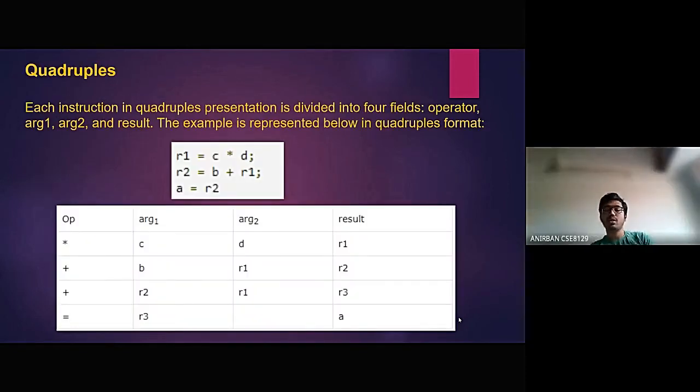The first one for representing a three-address code is quadruples. In quadruples, each instruction is divided into four fields, namely operator, argument 1, argument 2, and result.